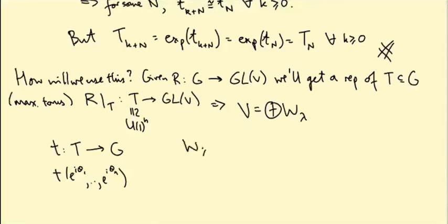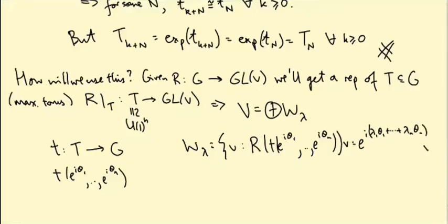So what is W_λ? W_λ is the set of vectors v in V such that R of ι(e^{iθ_1},...,e^{iθ_N}) times v equals e^{i(λ_1θ_1 + ... + λ_Nθ_N)} v, where λ is a vector of integers, λ_1 up to λ_N. So you can see the bigger our torus, the larger N is, and the more integers we have to split up our space V into weight spaces. That's why we're interested in the maximal torus.